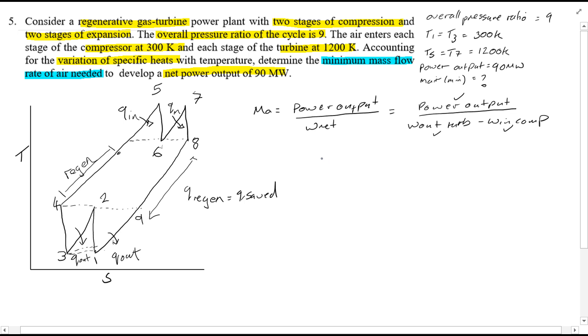Looking at the diagram we can see that p5 over p6 is equal to p7 over p8, and the overall pressure ratio is going to be equal to p5 over p8, which is also equal to p5 over p6 times p7 over p8. The overall pressure ratio is equal to the pressure ratio squared. rp squared is equal to 9, hence rp is equal to the root of 9, which is equal to 3.